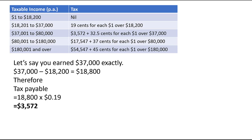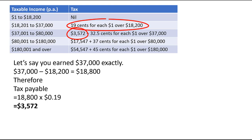You'll notice that $3,572 is also written in the tax table for the next tax bracket. The reason is that as you earn more money, you still pay the same amounts of tax on the smaller amounts you did before. So from $18,201 to $37,000 you pay 19 cents per dollar, but if you earn more than $37,000, you still pay that 19 cents per dollar on the $18,201–$37,000 portion. For everything over $37,000, you pay 32 cents for every dollar.